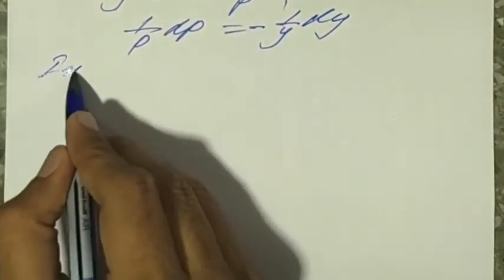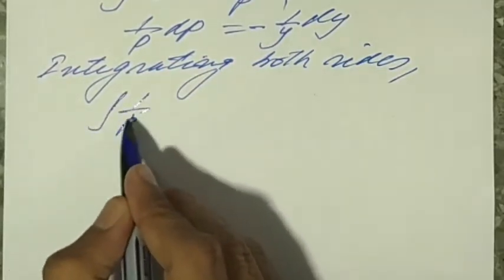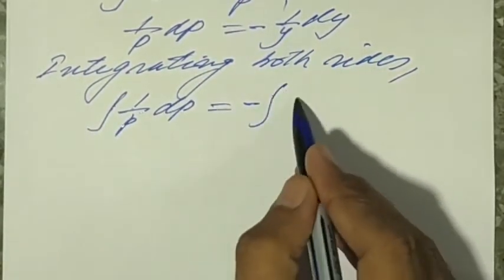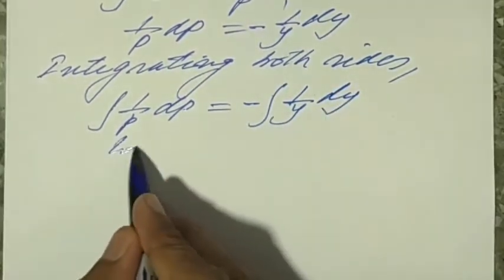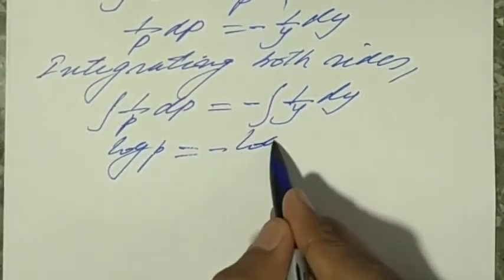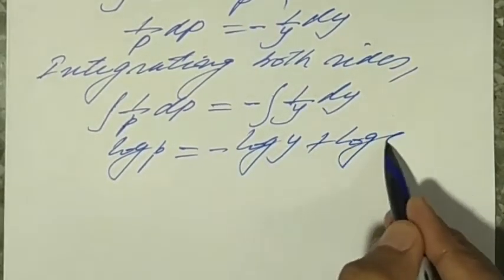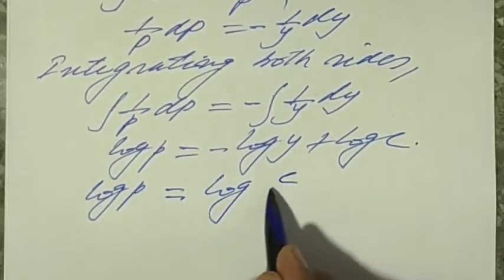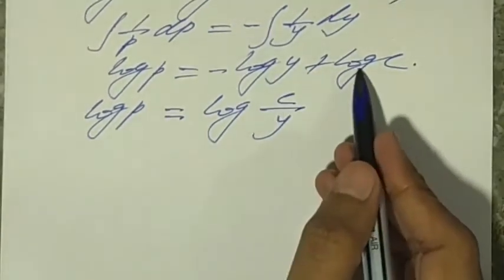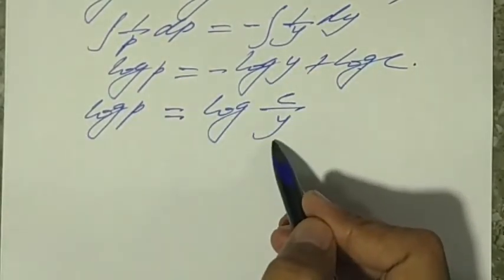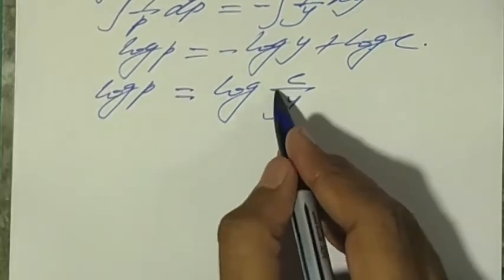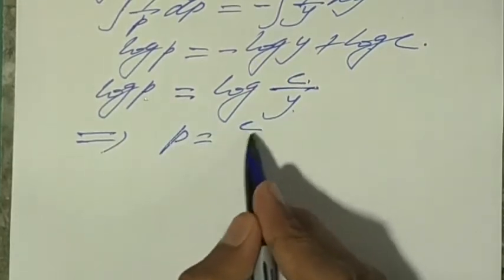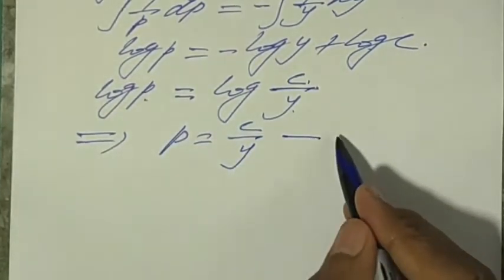Integrating both sides: ∫(1/p)dp = -∫(1/y)dy. So log p = -log y + log c, giving log p = log(c/y). Therefore p = c/y — equation 2.